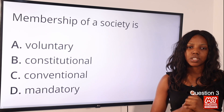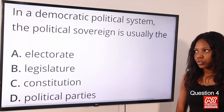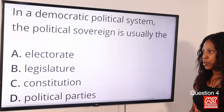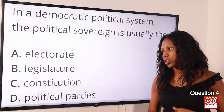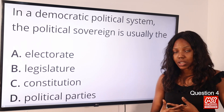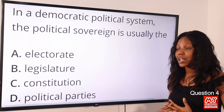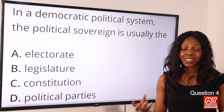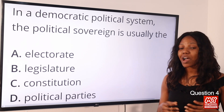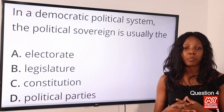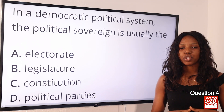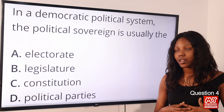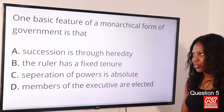Question 4: In a democratic political system, the political sovereign is usually — option A: electorate; option B: legislature; option C: constitution; option D: political parties. The answer is option A, electorate, which simply means the people. In a democratic system, power is vested in the people — the supreme power and authority rests with them.